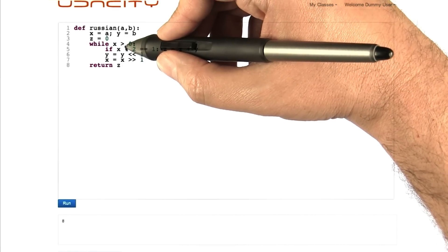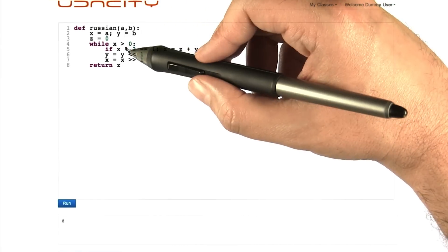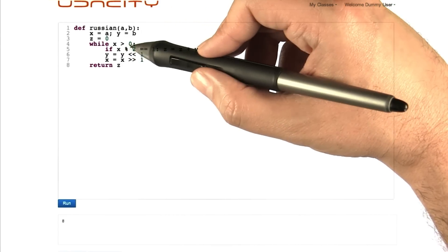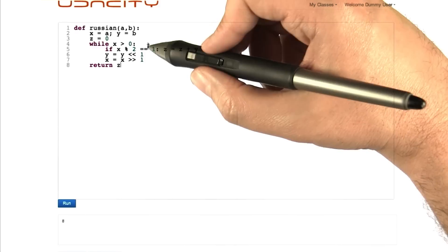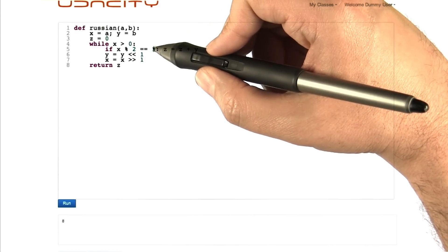And you may recall that this percent sign is the modulus operator. So what this is saying is take x, divide it by 2, and tell me what the remainder is. If it's 1, then do this. So what does it mean for a remainder to be 1? It means that it's an odd number.